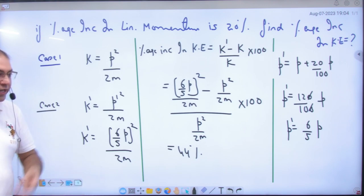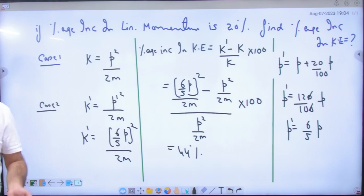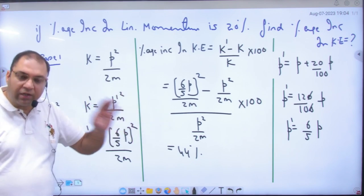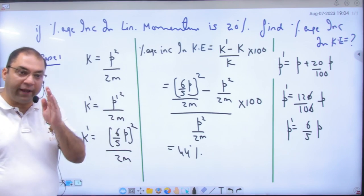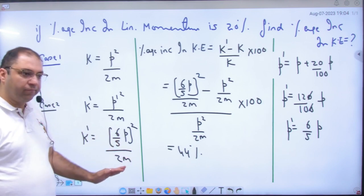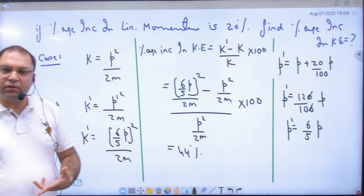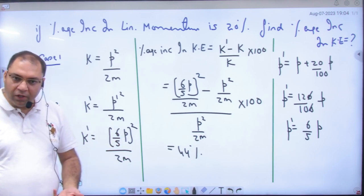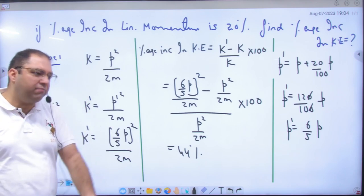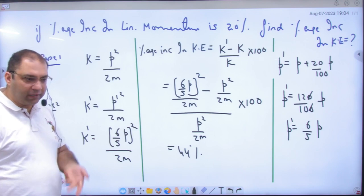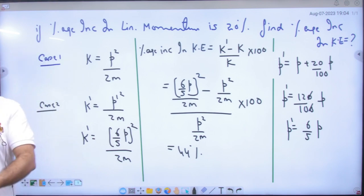Aur agar main itna bhi bata gaya to objective point of view se kam se kam do option eliminate to ho jayenge. Ho sakte teen bhi ho jayenge. Aur ek answer fatafat nikala hai, ek shortcut bhi dekhna hai iska. Par yeh shortcut exact method nahi hai. Actual method yehi hai. Please agar aapke school mein subjective aayega, yehi karna. Agar aapko accurate answer nikalna hai to yehi karna. Lekin objective mein pehle mera method lagana.